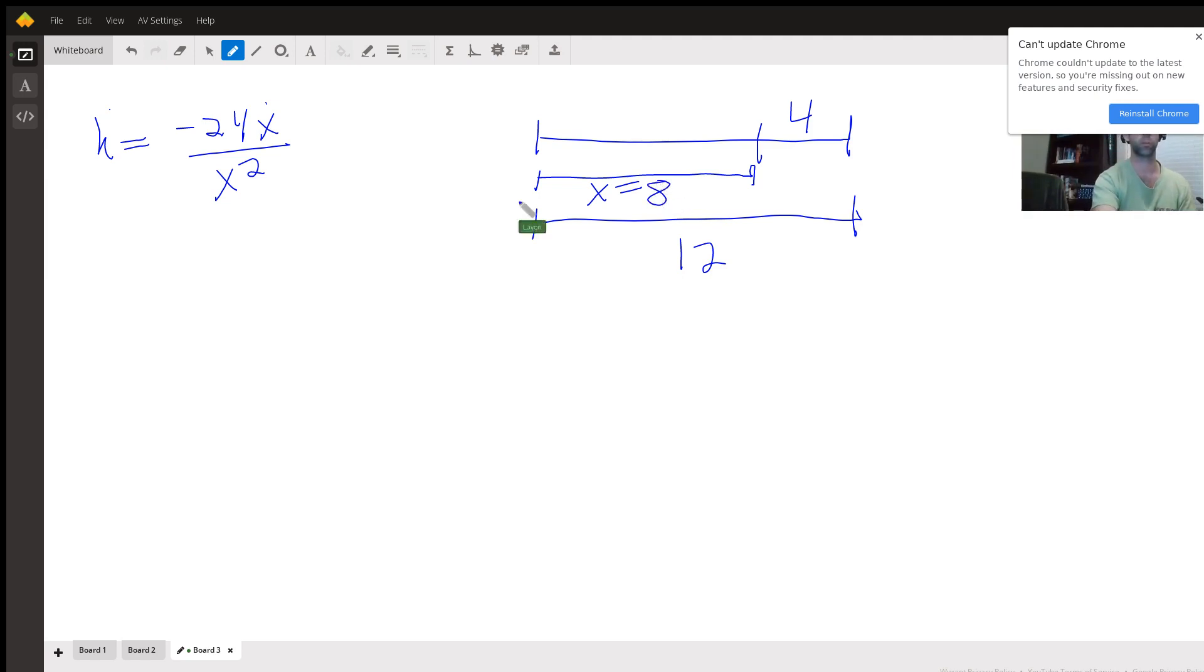So we just plug in the numbers. So then h dot is negative 24 over 8 squared, and x dot was 1.1 meters per second.